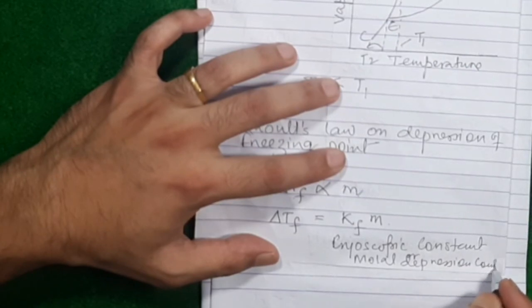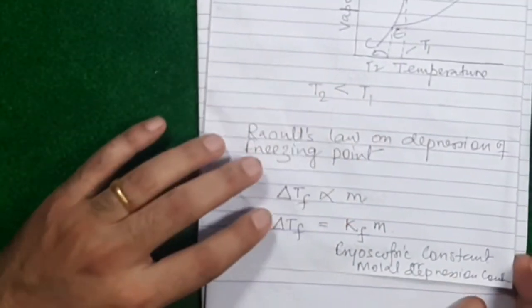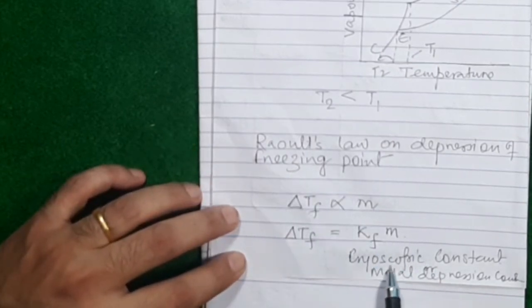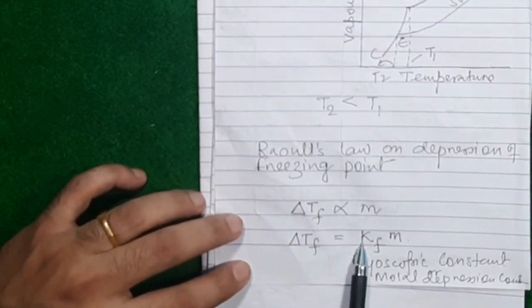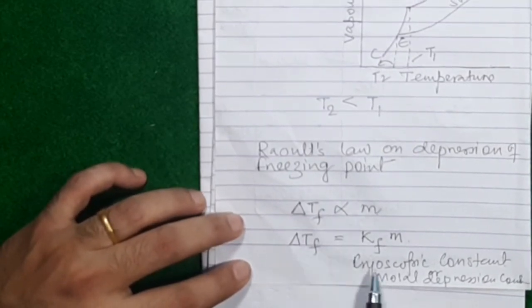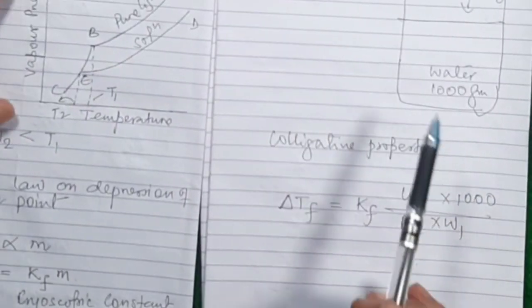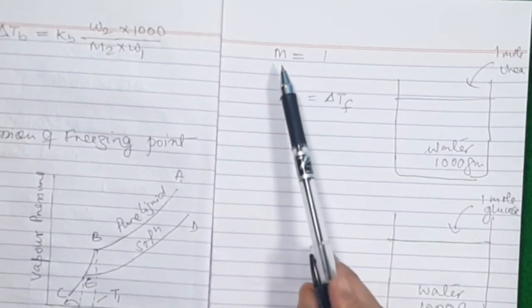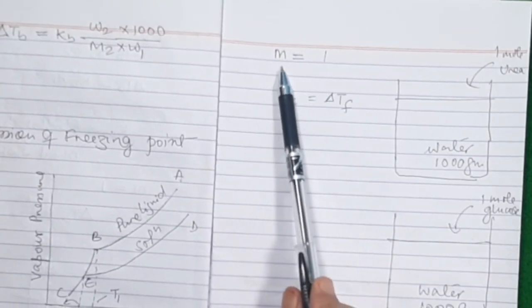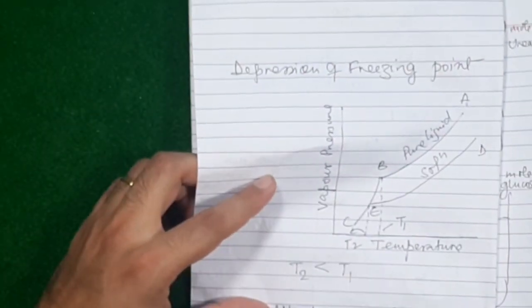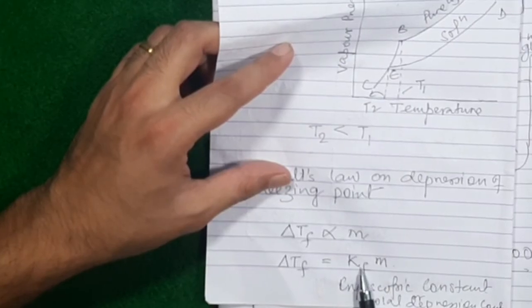When you turn this proportionality to equality, you put a constant called the cryoscopic constant — not ebullioscopic now. It's known as the cryoscopic constant, also known as the molal depression constant. The meaning of Kf is found by assuming molality is 1 — when m = 1, Kf equals delta Tf. So Kf is the depression in freezing point when you have a solution of molality 1.